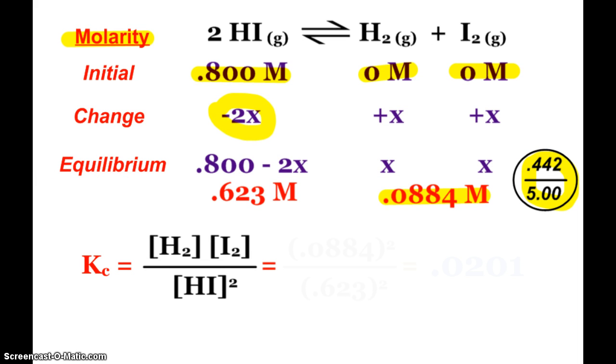So I'll have 0.0884 squared on the top, 0.623 squared on the bottom. And none of my equilibrium constants will have a unit, but here you should get 0.0201.